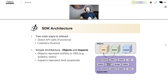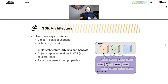The SDK architecture is actually very simple to understand. There are two main ways to interact familiar to any developer: direct API calls, which are just normal function calls, very easy to use; and listeners, also known as events, which we saw in the gears example with mission listener. The architecture is built around the concept of objects and aspects. Objects represent entities in VBS such as soldiers, tanks, cameras; and aspects represent their properties. Any movable object would have the transformation aspect, while only the camera would have the camera aspect, and the soldier would have the life form aspect.